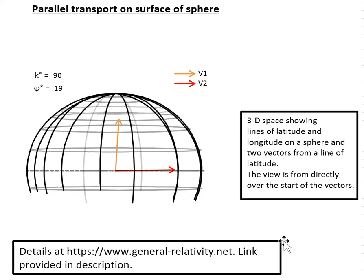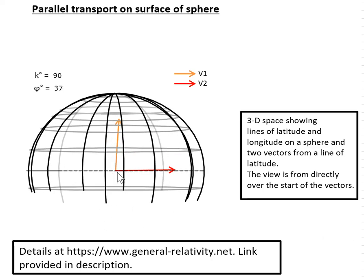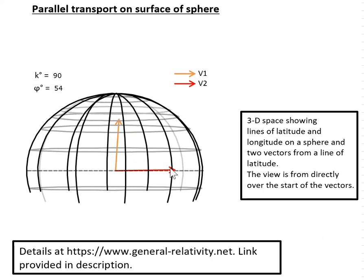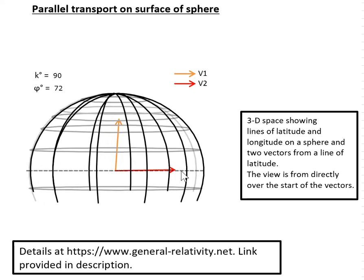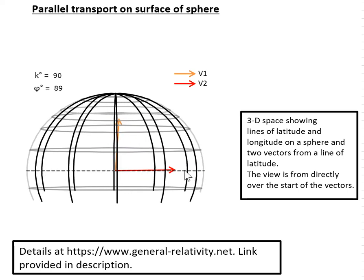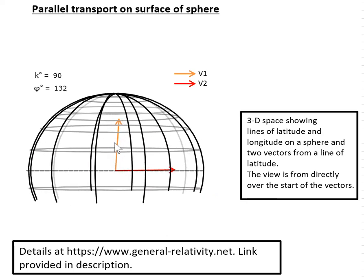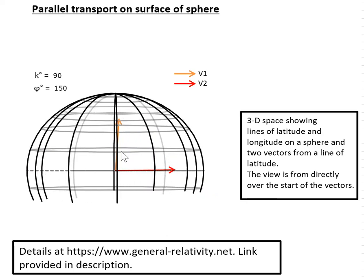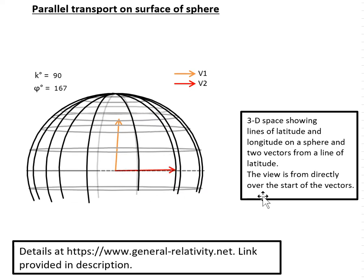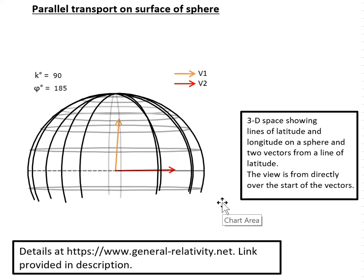And here we can see the tangent vector, which is the red one, staying exactly on the line. That's because it's a geodesic. And the vector at right angles is staying at almost right angles, is staying at exactly the same angle. Rock steady.